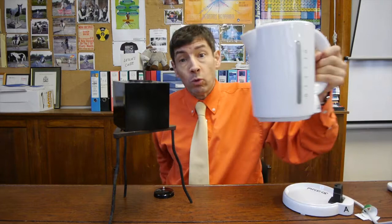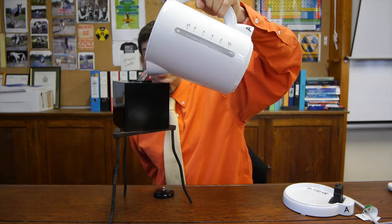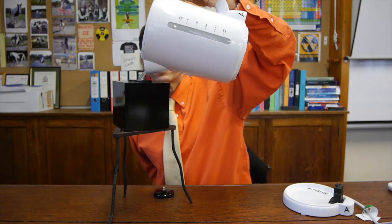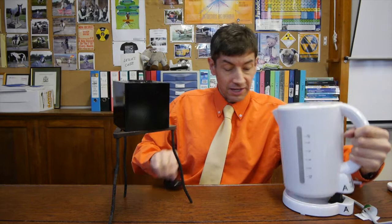Right so the kettle's just boiled so let's take the lid off and what we'll do is put the boiling water into the Leslie's Cube and I need to fill it up to the top. There we go. And then I'll stick the lid on and what we'll do is we'll measure the temperature or at least the infrared radiation coming off the different sides.